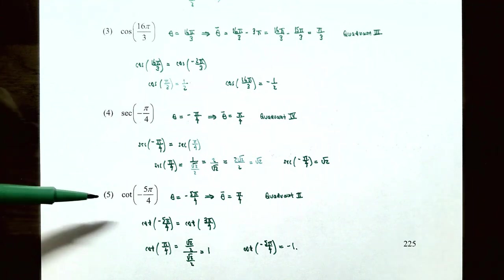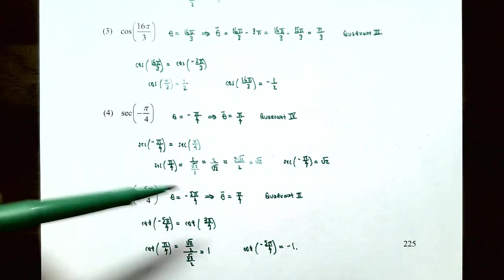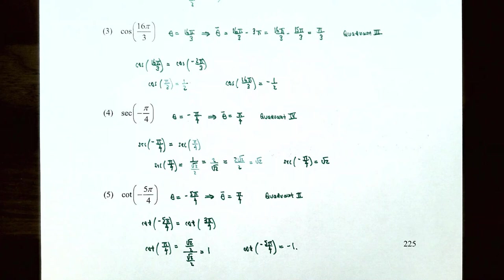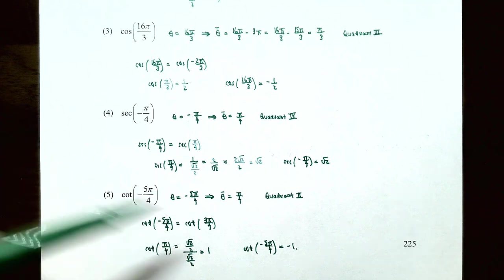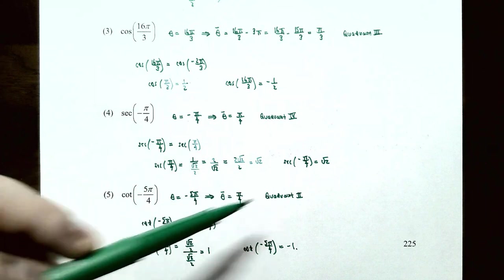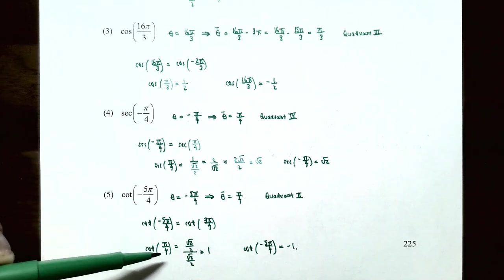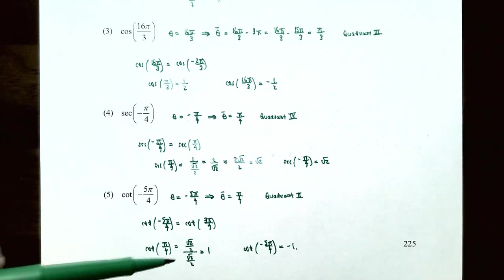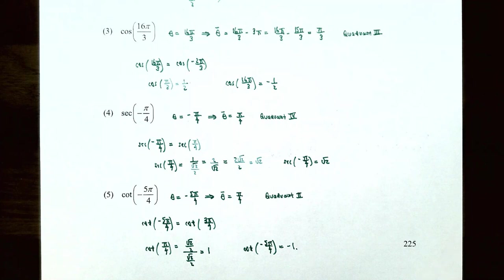Number 5: cotangent(−5π/4). The angle −5π/4 is a clockwise rotation greater than π radians, placing theta in quadrant two, with θ̄ = π/4. Cotangent(π/4) = x/y = (√2/2)/(√2/2) = 1. Since cotangent is negative in quadrant two, cotangent(−5π/4) = −1.